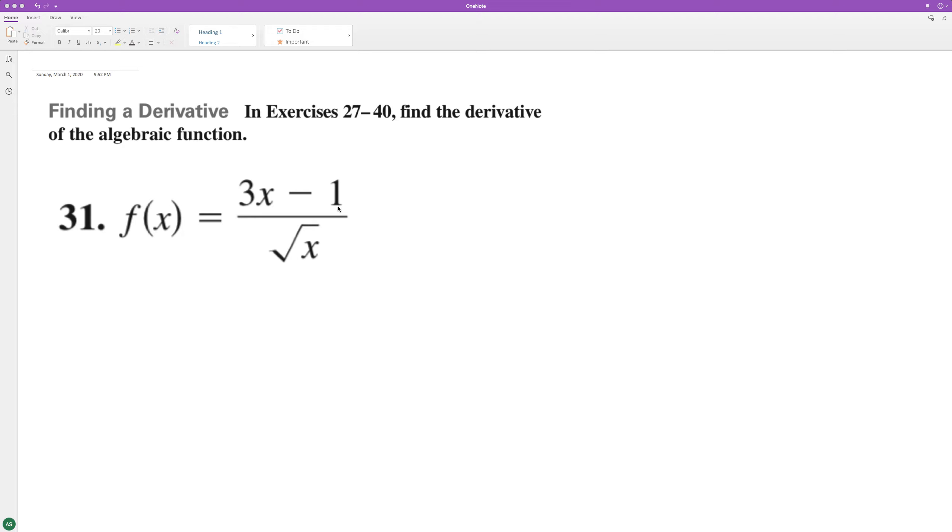The following using the quotient rule. So what we'll do here is the derivative. We'll start off with the numerator, which is just three times the denominator, which is x raised to one half, minus the numerator times the derivative of the denominator.